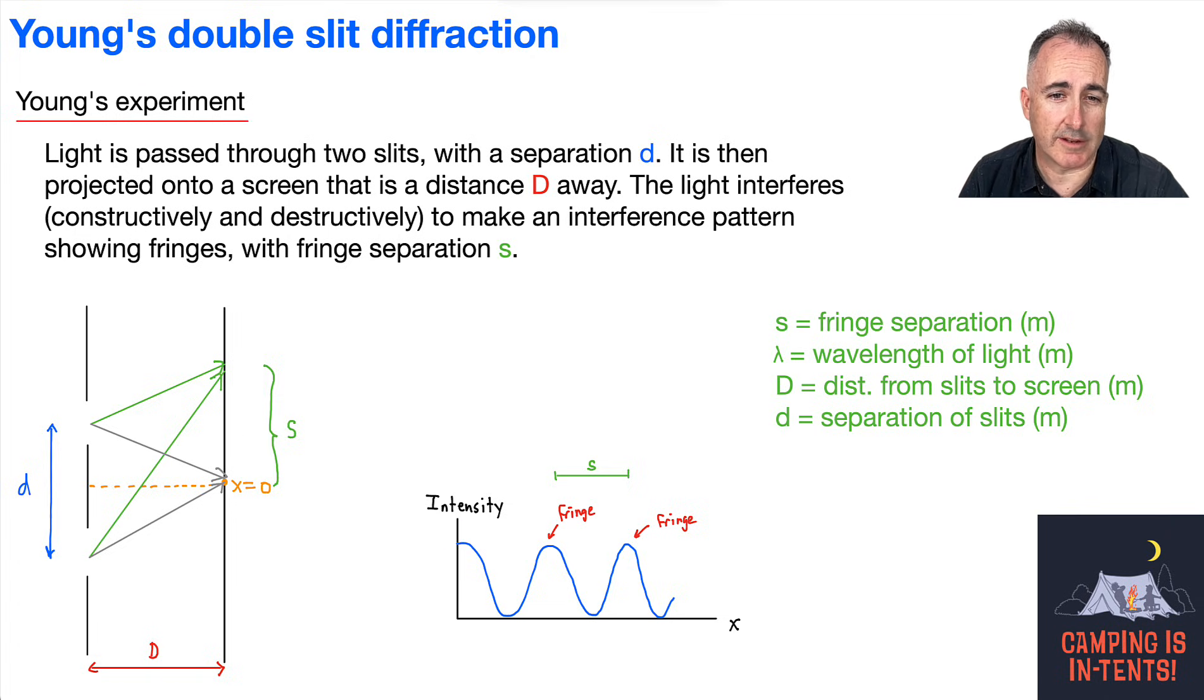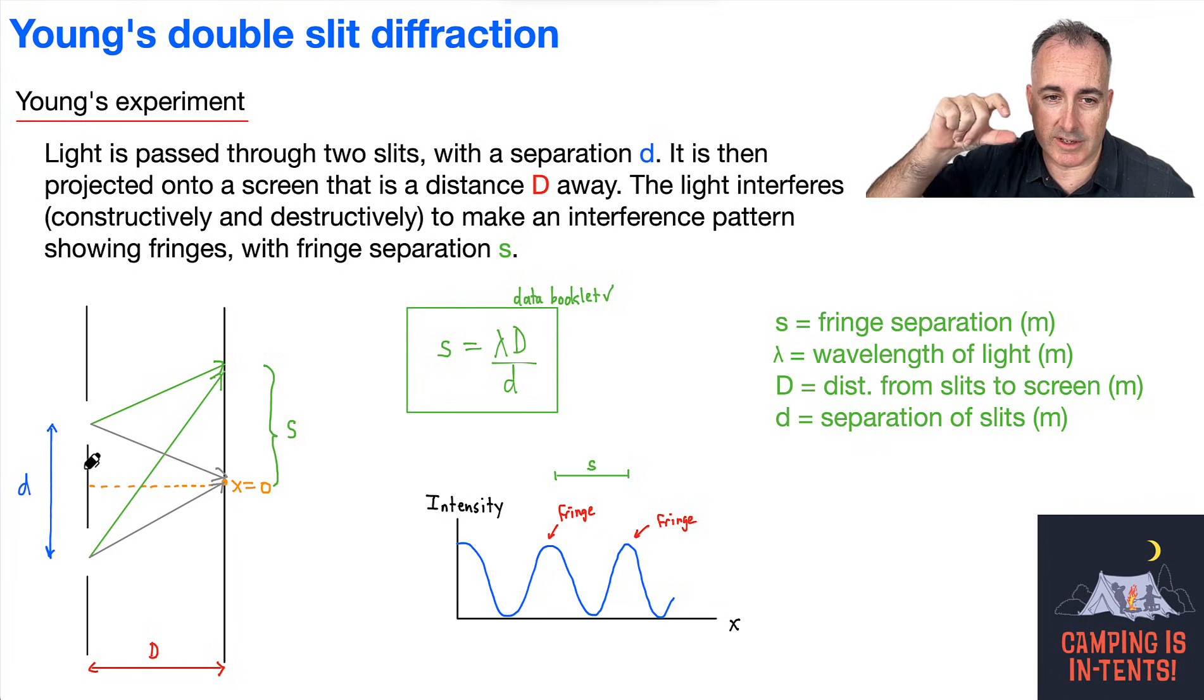So we have an equation from our data booklet, and it goes like this. It just goes s equals lambda capital D over lowercase d. This is, by the way, supposed to be a lowercase s, so maybe I'll redraw it just so it's really clear that it's a small s. So this equation, I think the trick to this is just knowing what each letter means. So this s is the fringe separation. Lambda is the wavelength of light. Capital D is the distance from a slit to the screen. I remember that because capital D, it's usually like the bigger distance, whereas this is a smaller distance, so that's like a lowercase d. Well, that's how I remember them, at least. So these are these different fringes here.